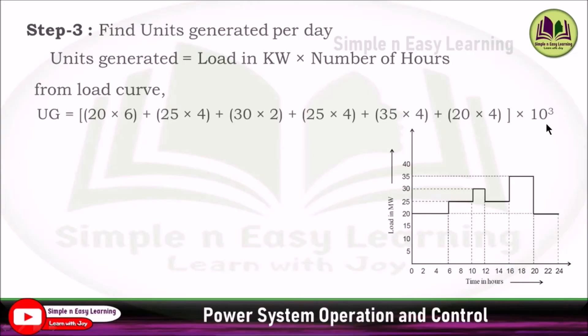Overall into 10 power 3. Why we need to put 10 power 3? Here the load is represented in megawatt, but in the formula, load in kilowatt times number of hours, the units generated will be represented in terms of kilowatt hour. That's why we are multiplying with 10 power 3. Units generated per day will be equal to 600 into 10 power 3 kilowatt hour.